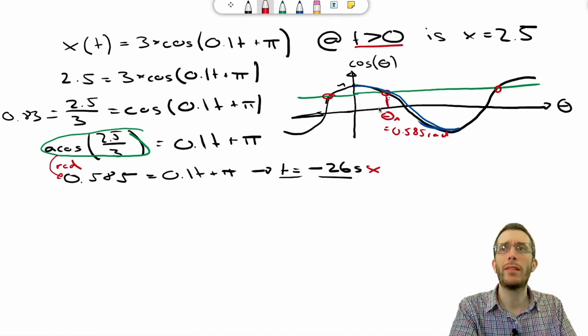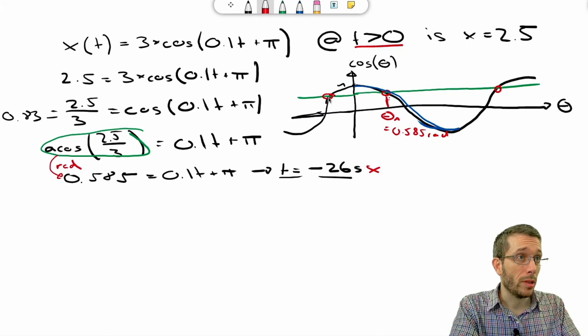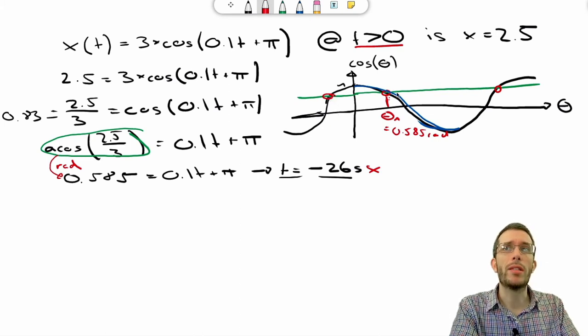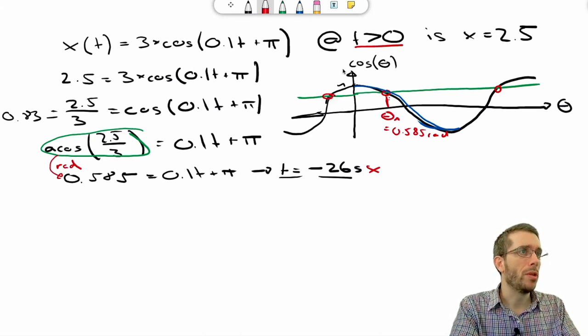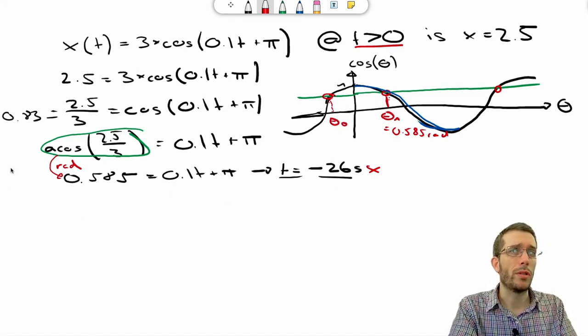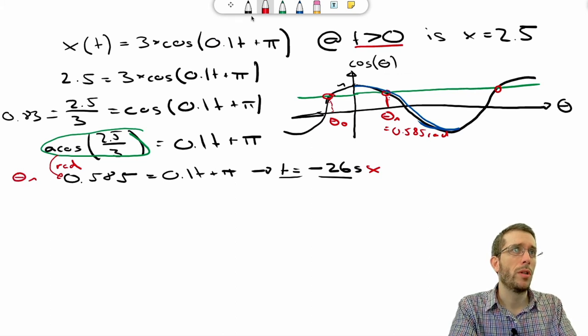So now, how do we get the other solutions? Well, the key to that here is a sketch and you look at the symmetries of the sketch. Here I had another one, let's call this θ0. That will simply be my other angle inverse. So this one here was θ1, which led me to time 1.